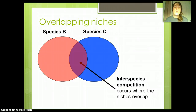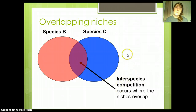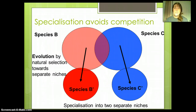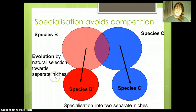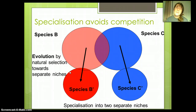When niches start to overlap is where we get interspecies competition — inter meaning between different species. Sometimes if there's too much overlap, different species can evolve by natural selection toward specialization. Specialization means them developing characteristics that allow them to become more different than they would have been if they didn't both exist in that area.